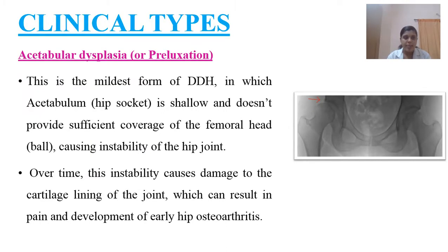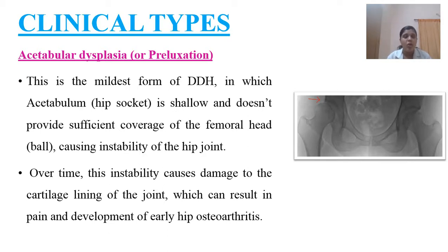The first clinical type is acetabular dysplasia, also known as relaxation — the mildest form of DDH. Here the acetabulum, which is the socket in the hip where the femur attaches, is very shallow and does not provide enough space for the femoral head. This leads to instability of the joint and can result in pain and, in later stages, osteoarthritis. An image shows the shallow acetabulum clearly.